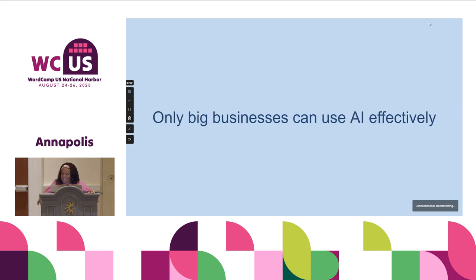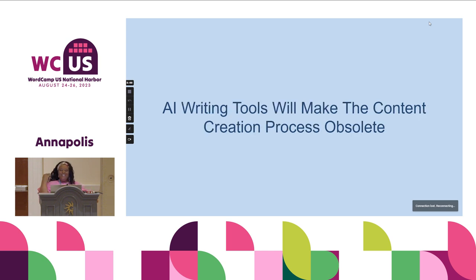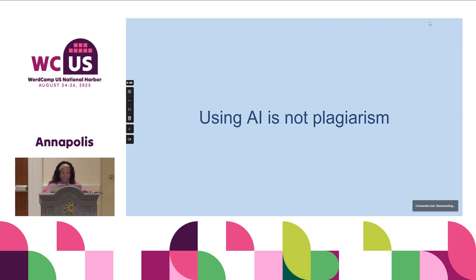Only big businesses can use AI effectively. It will replace the need for a content strategy. Writing tools will make the content creation process obsolete. It's not plagiarism — it's murky water, which is one of the things I'm going to discuss, because we have to be discerning in the way that we use it.